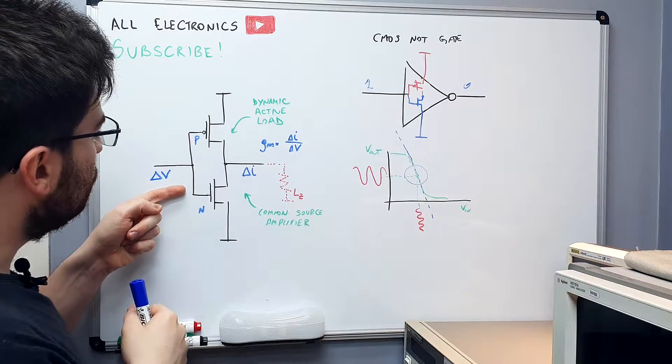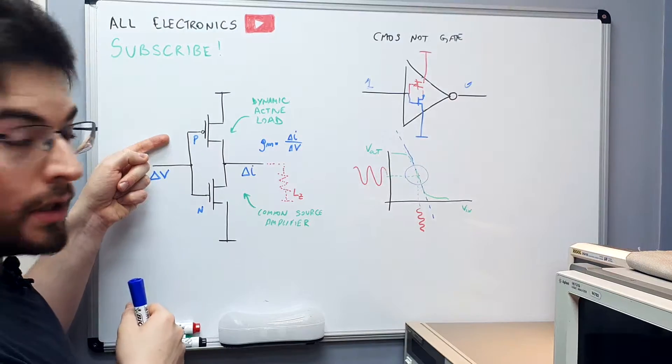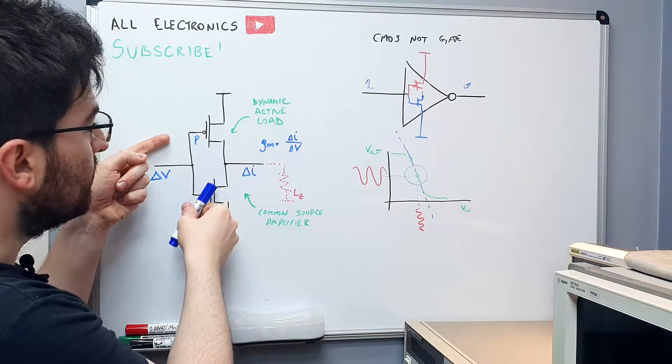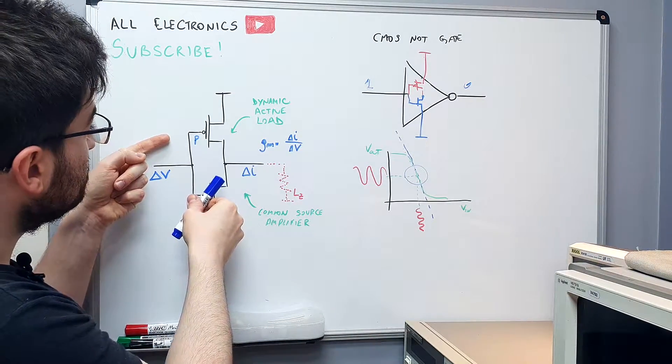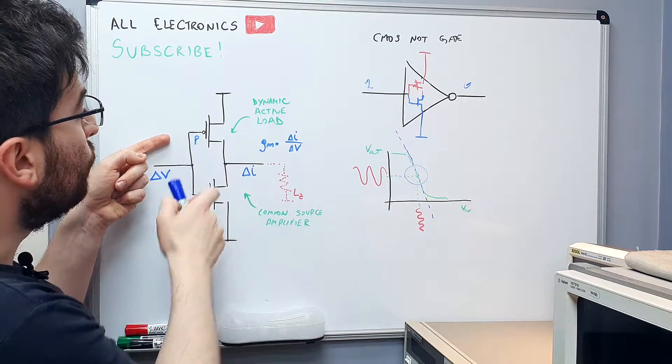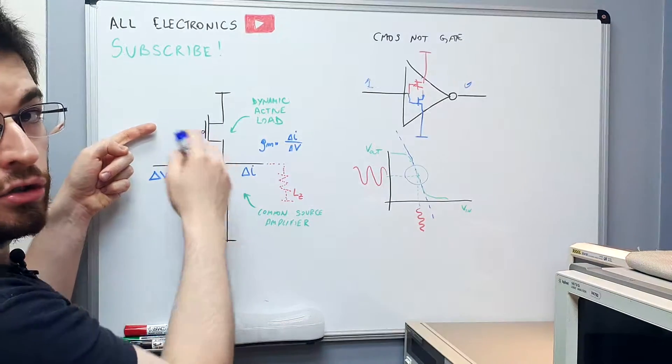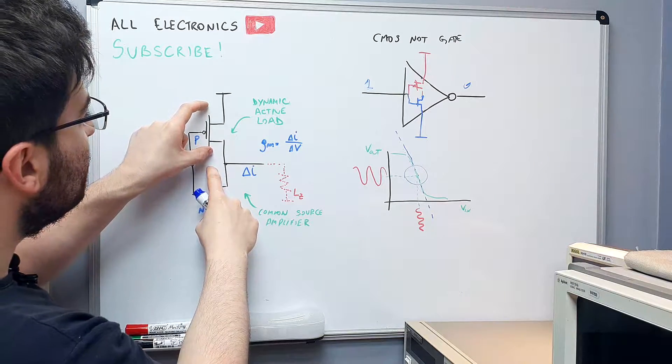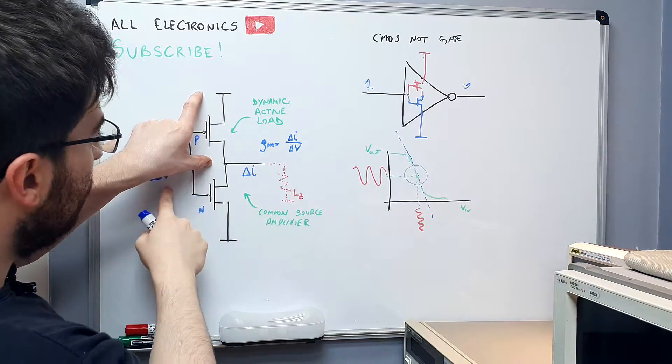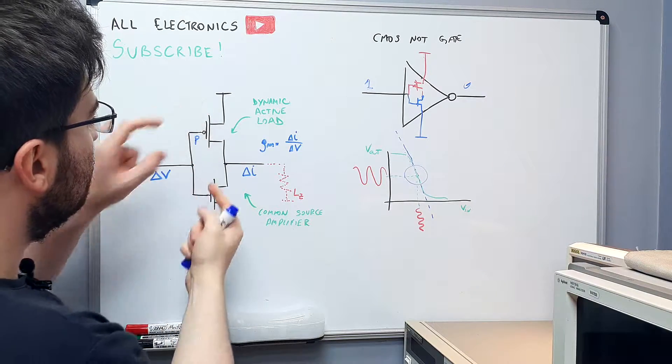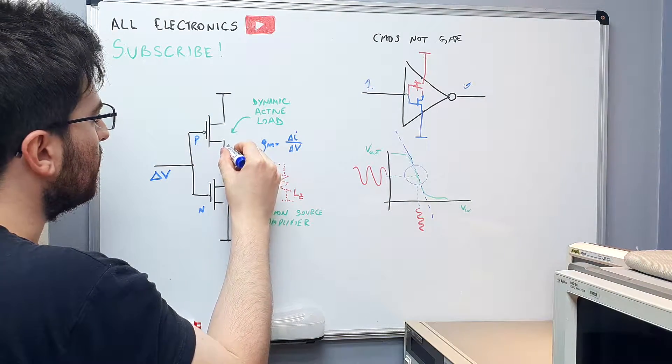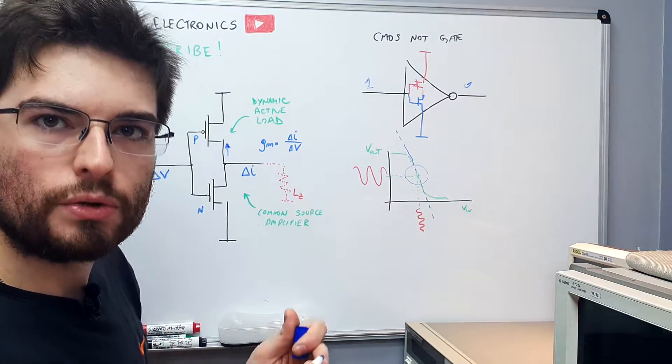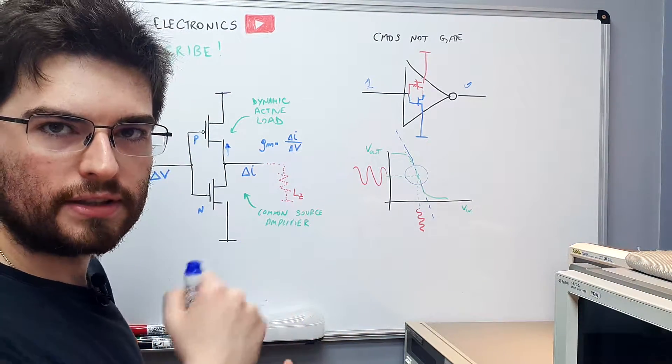When the small signal is higher, the NMOS device will try to conduct more current on its output and the PMOS will conduct less current. So we can think about this as an NMOS with a resistance that increases with voltage. If the resistance seen in the drain of the PMOS increases with voltage, it helps to increase the gain of this stage.